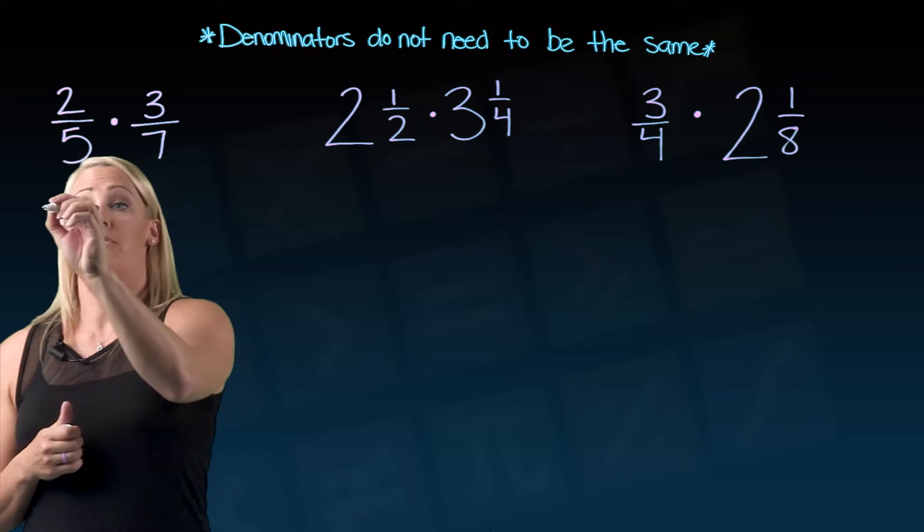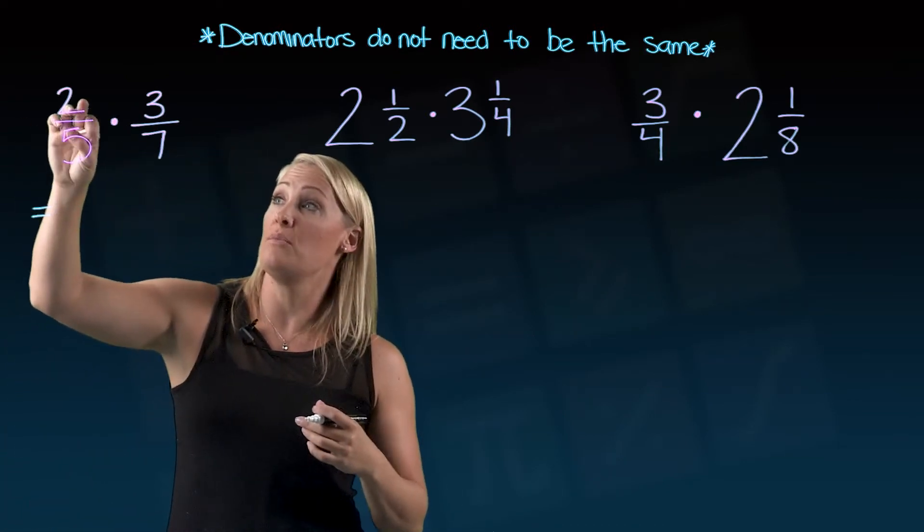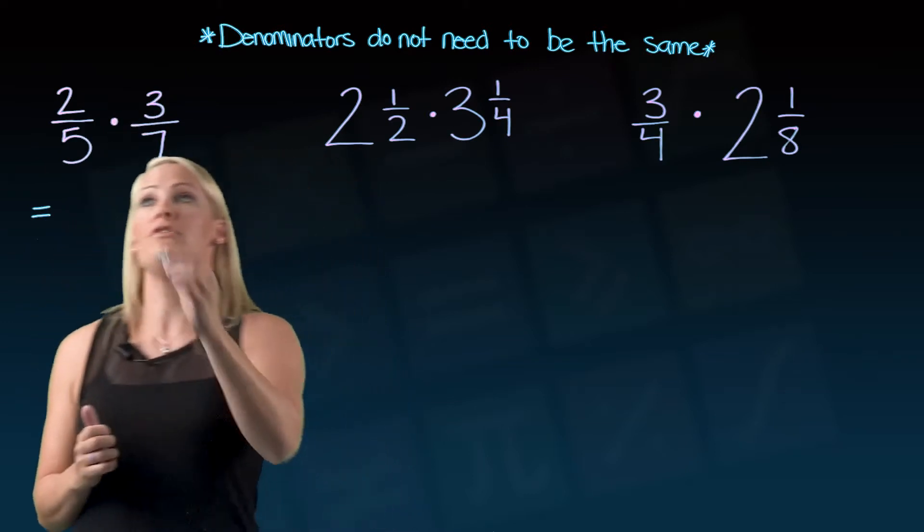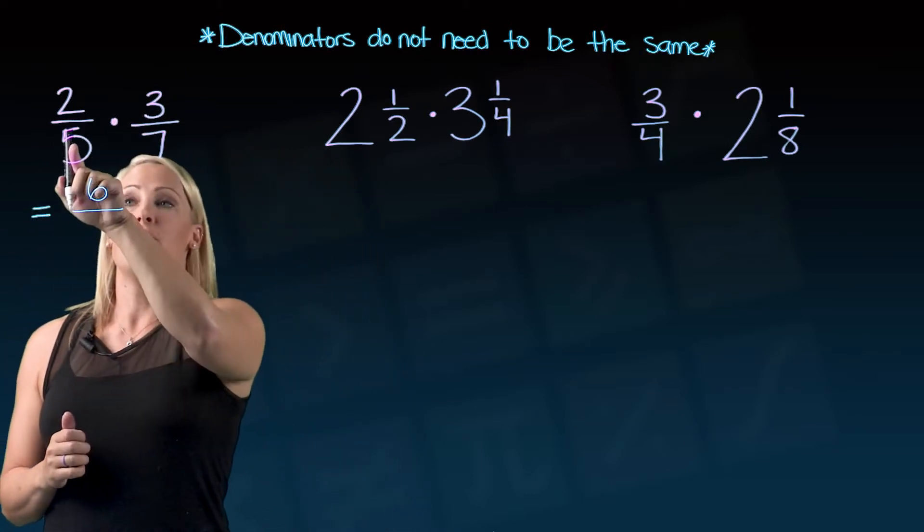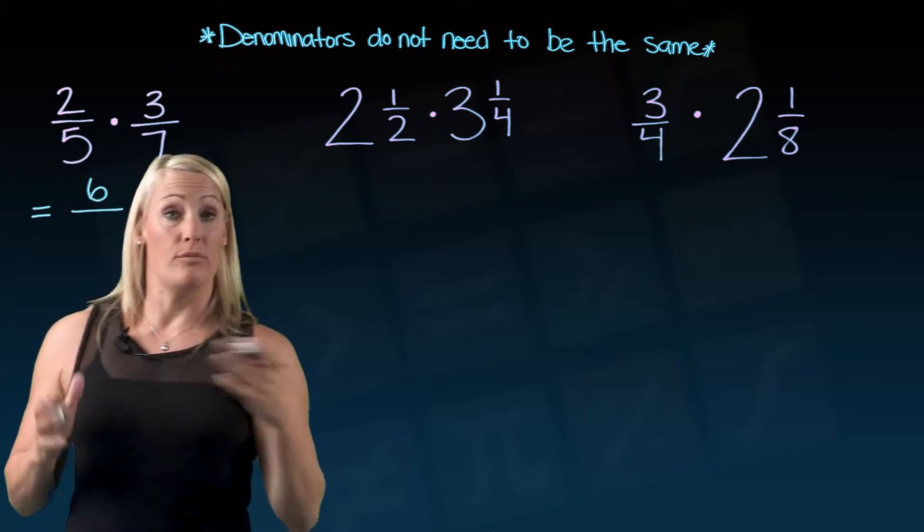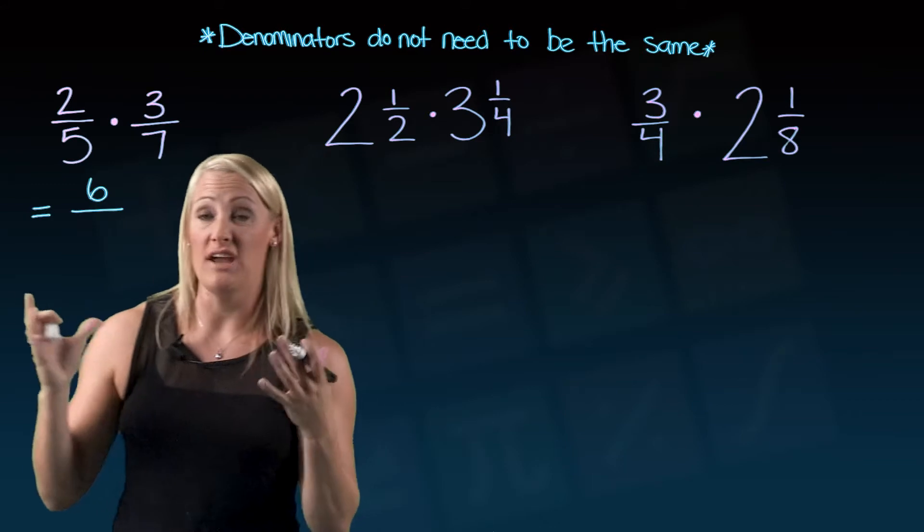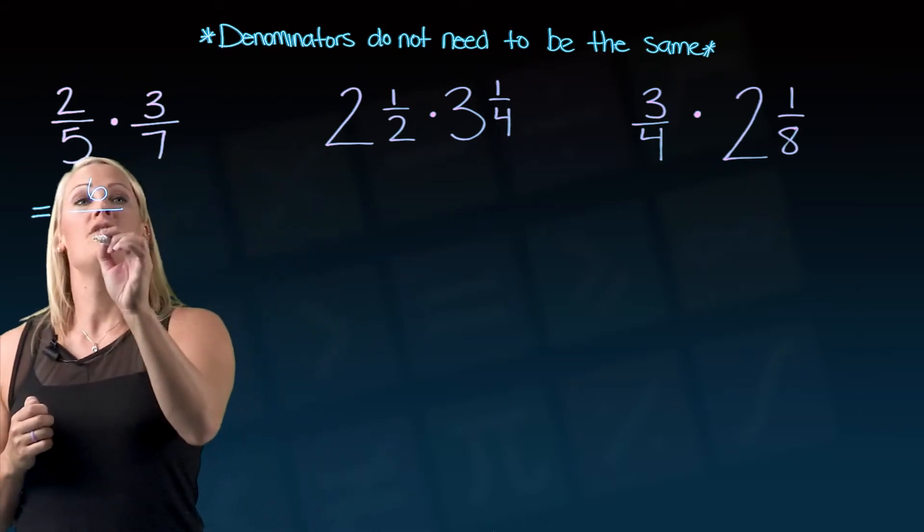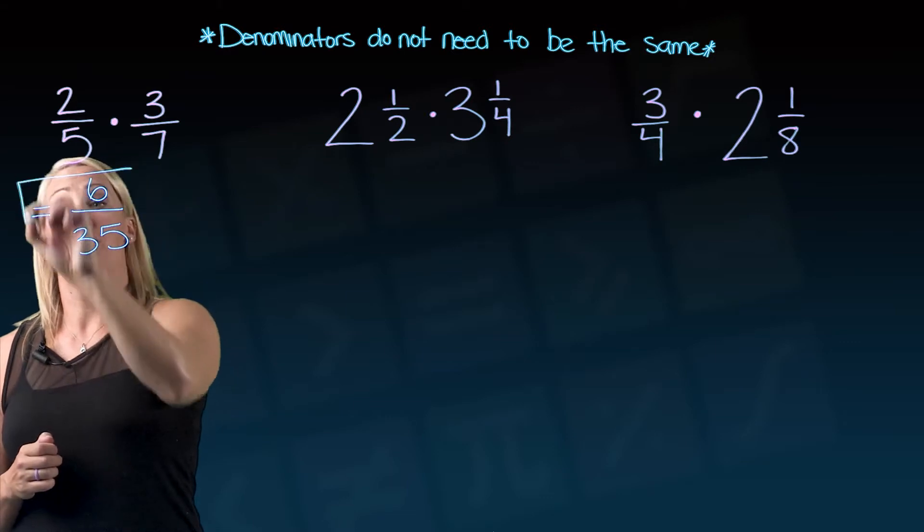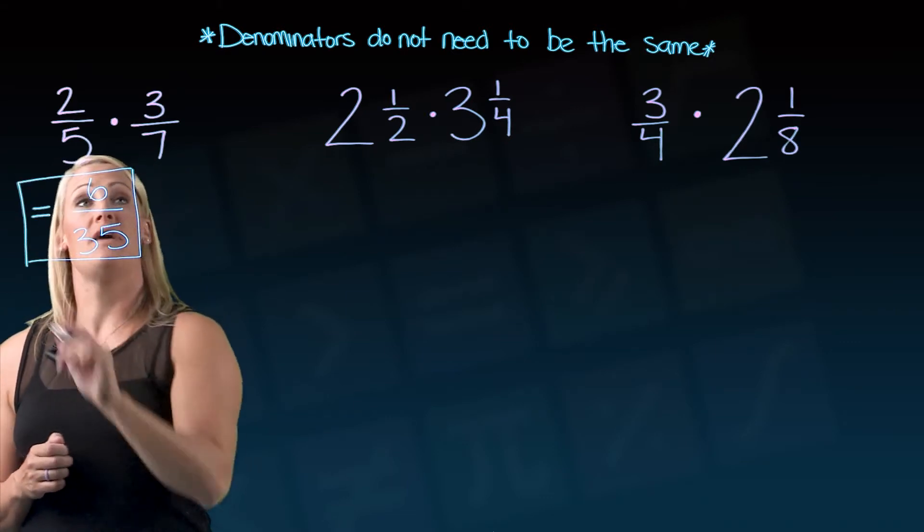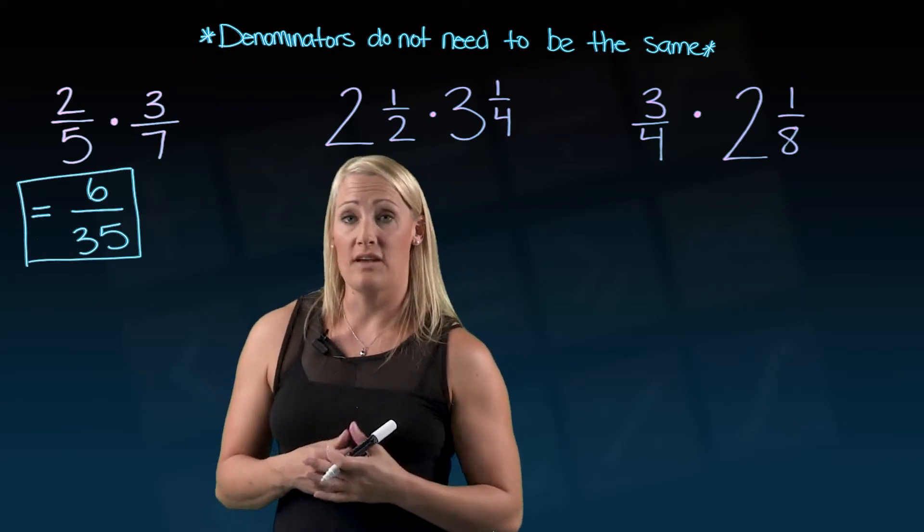So this question is actually quite straightforward. I just need to multiply straight across. I multiply the top number times the top number, so 2 times 3. And then I multiply the bottom number times the bottom number. Again, that's different from adding and subtracting. They don't stay the same. They change. You actually do multiply them. So 5 times 7 is 35. So the answer to that one, 2 fifths times 3 sevenths, multiplied straight across, is 6 over 35.